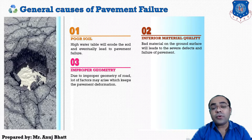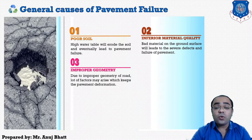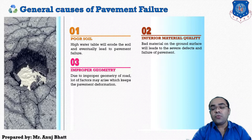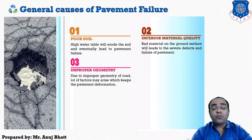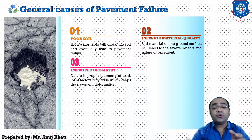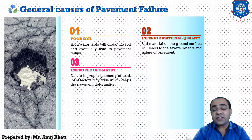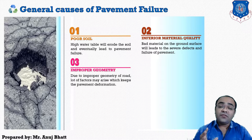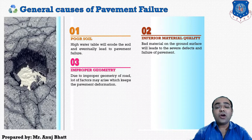The next cause is improper geometry. Due to improper geometry of the road, many factors may arise that keep the pavement in deformation. If the geometry is uneven and there is variation in the geological condition, it will create problems during and after construction that may fail or deform the pavement. So the geometry of that particular land should be proper.